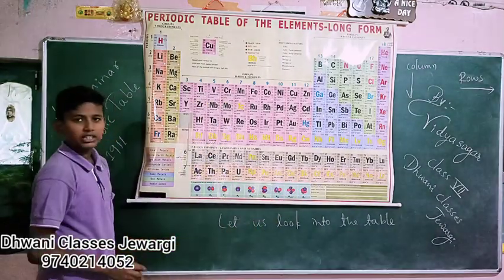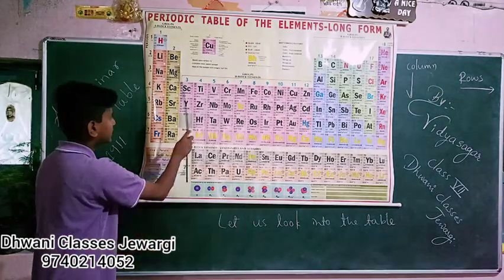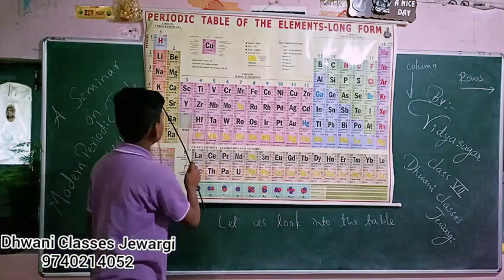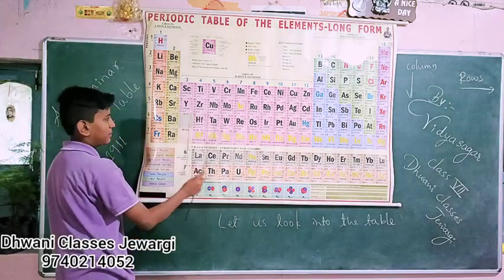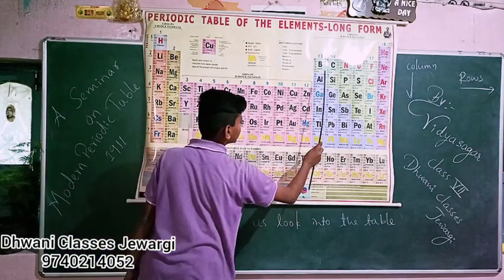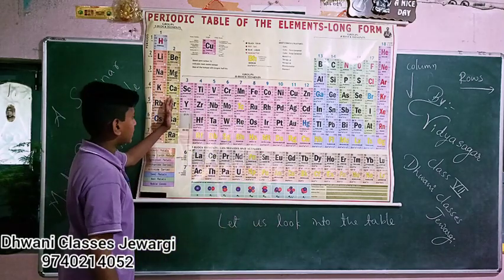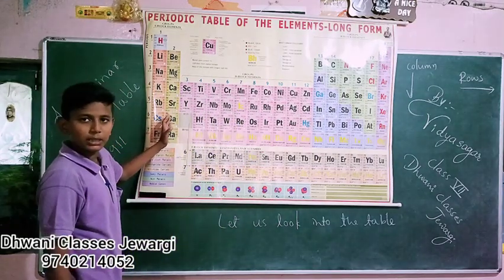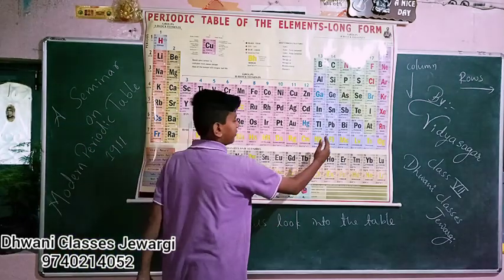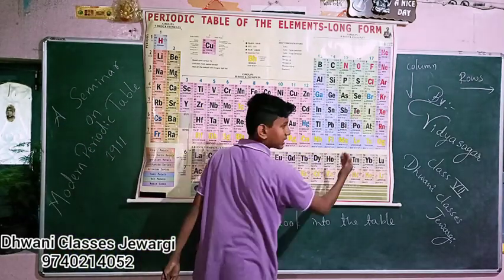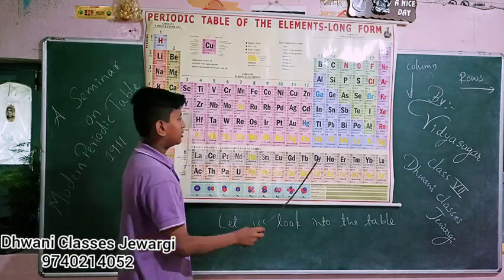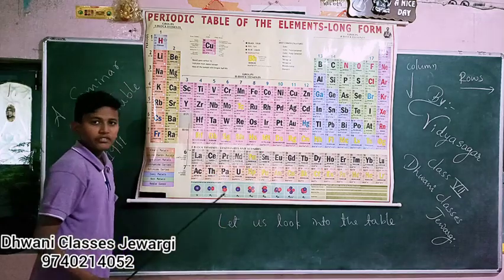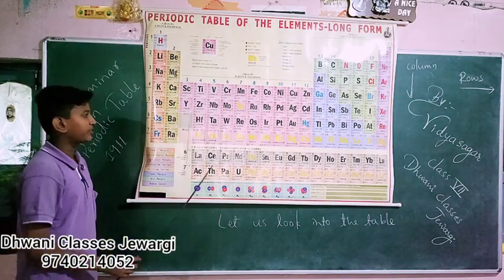The elements are classified into 3 types: metals, non-metals, and metalloids. These are the metal elements. These are the non-metal elements, and these are the metalloids. The metalloid elements are sandwiched between metals and non-metals, as shown in the figure.